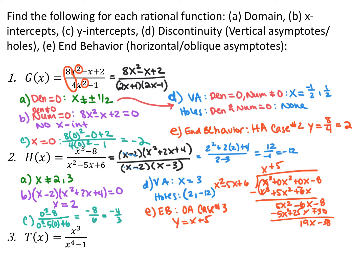For the second function, I factored completely. The numerator x cubed minus 8 is a difference of cubes: (x minus 2)(x squared plus 2x plus 4). The denominator factors into (x minus 2)(x minus 3). Anything that makes the denominator zero is not allowed, so x cannot be 2 or 3. For x-intercepts, I set the numerator equal to 0 and got x equals 2. For y-intercepts, I set x equal to 0 and get negative 8 over 6, or negative 4 thirds. For discontinuity, x equals 3 is a vertical asymptote (that factor doesn't cancel), and x equals 2 is a hole (that factor cancels). Plugging 2 into the simplified function gives (4 plus 4 plus 4) over (2 minus 3), yielding a y-coordinate of negative 12.